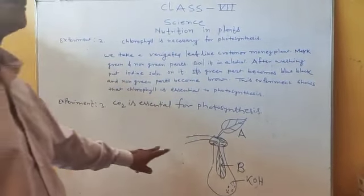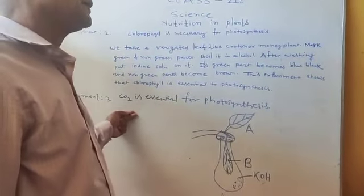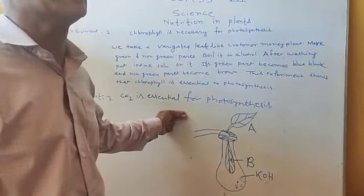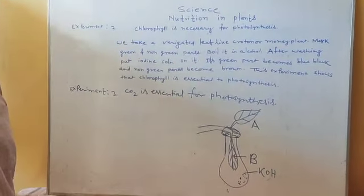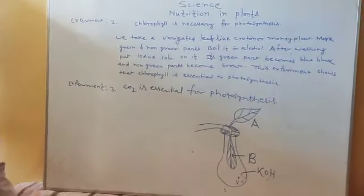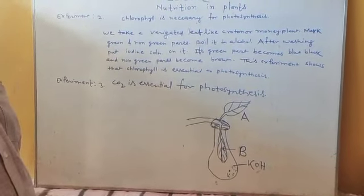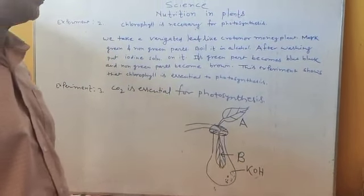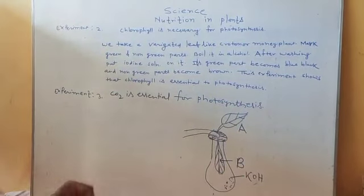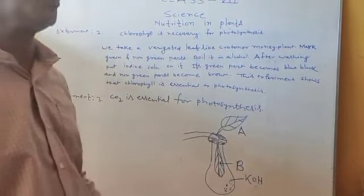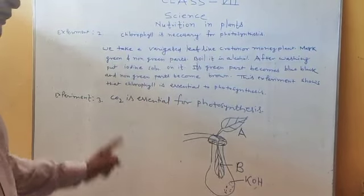By this experiment, we can say that carbon dioxide is essential for photosynthesis. Photosynthesis can take place only when carbon dioxide is present. KOH is the solution which can absorb carbon dioxide.